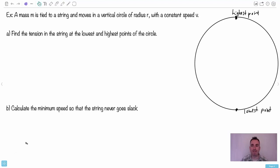I'd like to show you an example with that vertical circle because those are ones that cause a lot of people problems. So here we have a mass m and it's tied to a string. The string goes in a vertical circle of radius r with a constant speed v. So the question is, find the tension in the string at the lowest and the highest points of the circle.